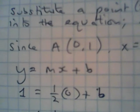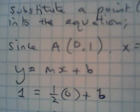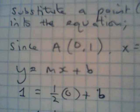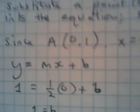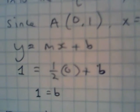My equation is going to be: instead of y, it's 1 equals, and instead of mx, it's half times 0 plus b. Then you'll get the b value.